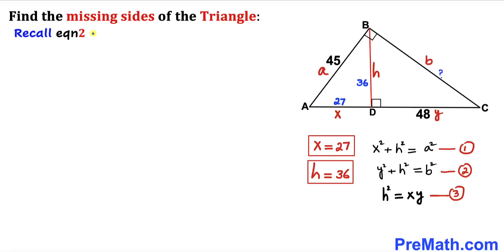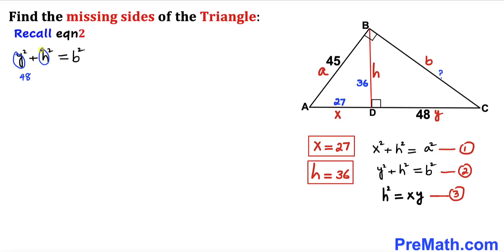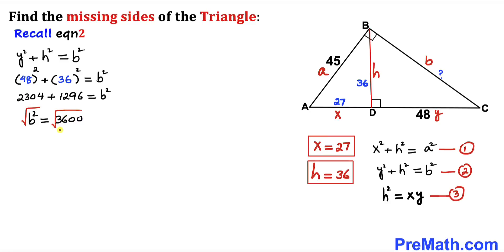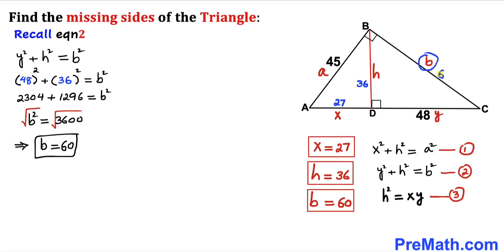Finally, recalling equation 2 — Y² + H² = b² — we substitute Y = 48 and H = 36. We get 48² + 36² = 2304 + 1296 = 3600 = b². Taking the square root, b = BC = 60 units.